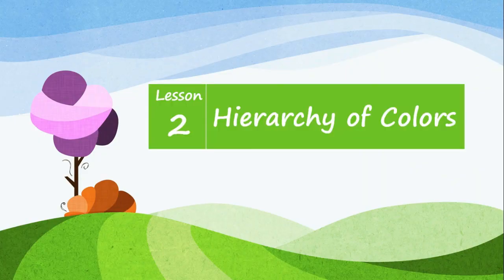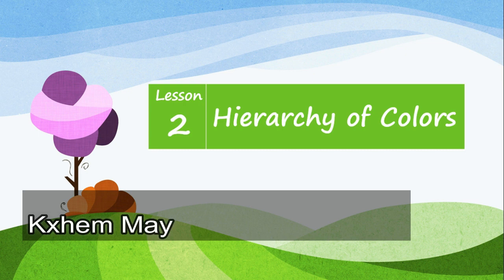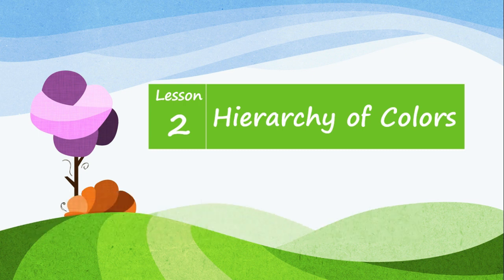Lesson 2: Hierarchy of Colors. Sa nakaraang aralin, natuto tayo tungkol sa pag-aayos ng mga kulay ng puting ilaw. Ngunit, ano ang pinapakita ng pag-aayos ng mga kulay ng ilaw sa mga tuntunin ng enerhiya? Aling kulay ng ilaw ang may pinakamalaking enerhiya? Sa araling ito, maiuugnay mo ang pag-aayos ng mga kulay at ang kaukulang lakas.